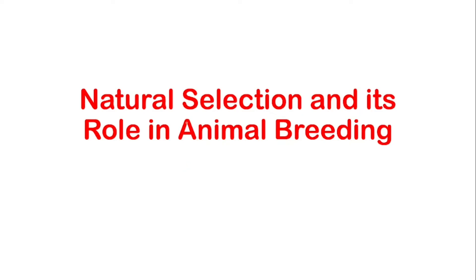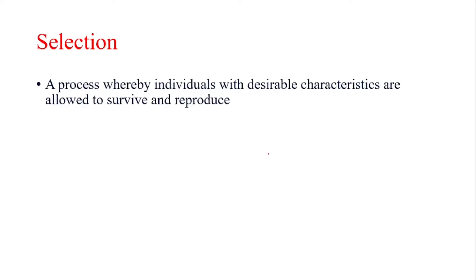Hello everyone and welcome back to my channel. In today's lecture I will talk about natural selection and its role in animal breeding. Before moving towards today's topic, I want to give you a brief introduction of selection. Selection can be defined as a process whereby individuals with desirable characteristics are allowed to survive and reproduce. In a population, only those animals would be able to reproduce or survive which have some desirable traits.